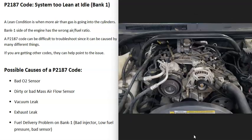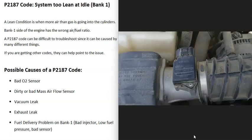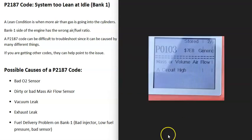A dirty or bad mass airflow sensor can also cause this code. These sensors measure all the air going into the engine, and if they go bad they can cause problems. Usually a bad MAF sensor affects both banks, not just one. You'd also typically get another code like a P0103 — mass or volume airflow circuit high — so if you're getting that code, go check the mass airflow sensor.